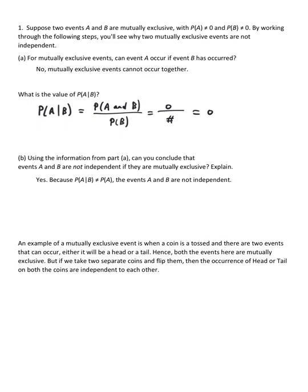An example of a mutually exclusive event is when a coin is tossed and there are two events that can occur. Either it will be a head or a tail. You can't have both. Hence, both the events here are mutually exclusive. But if we take two separate coins and flip them, then the occurrence of head or tail on both the coins are independent to each other.